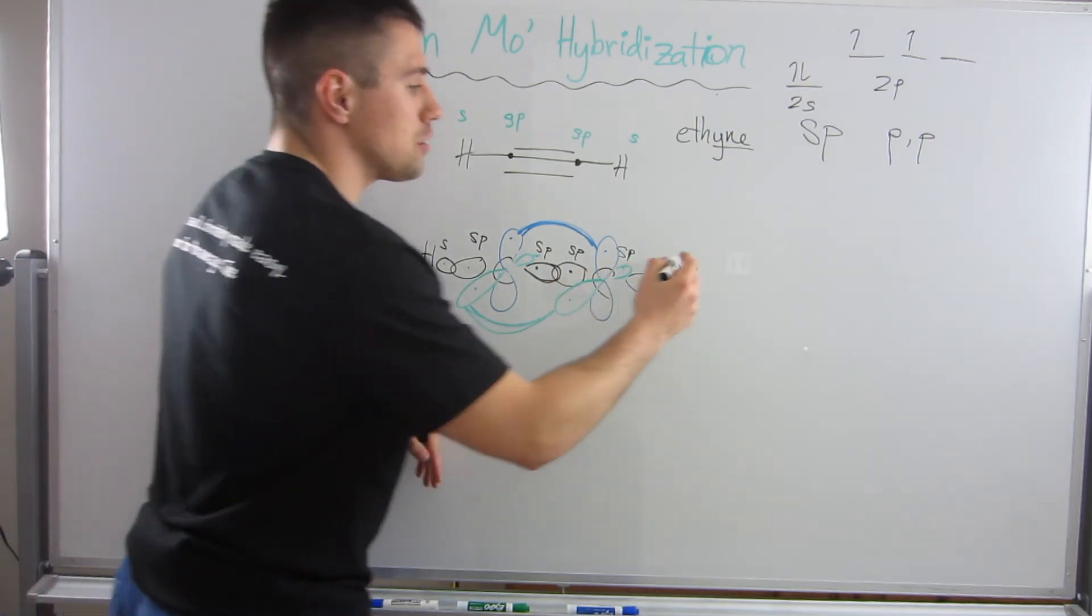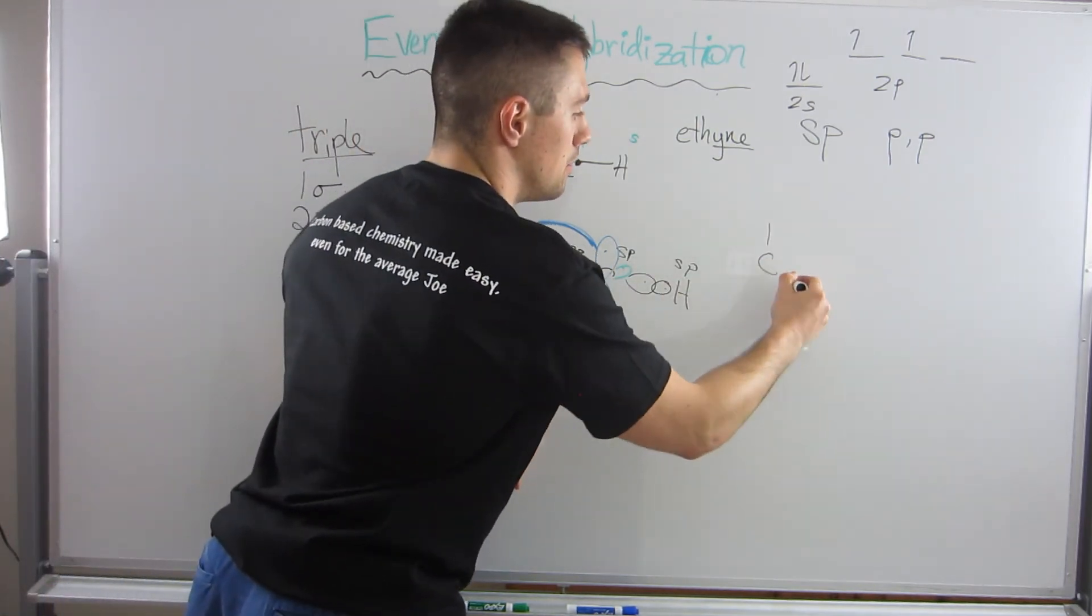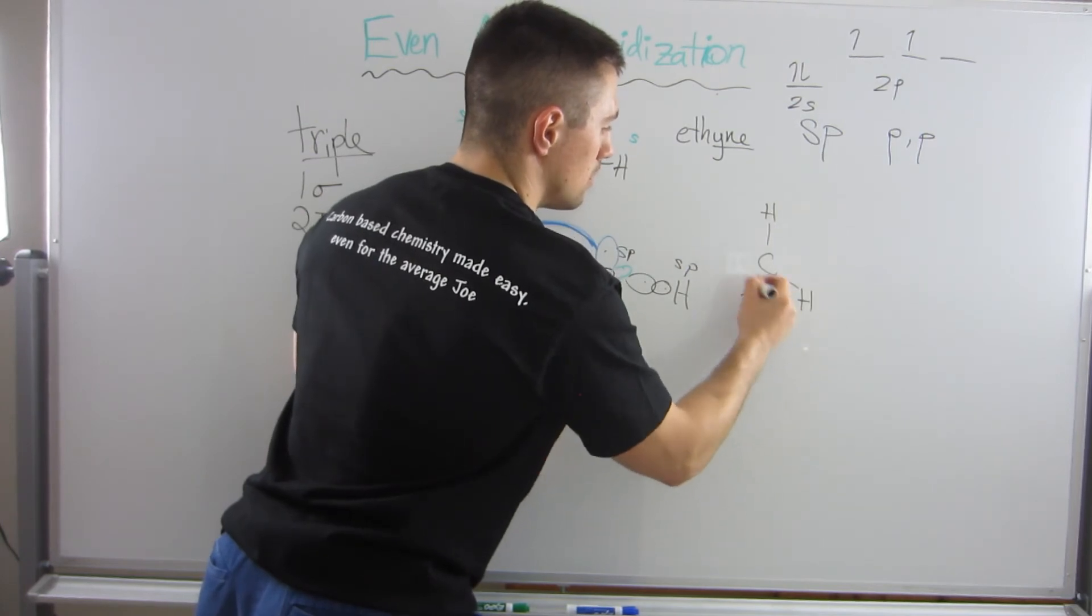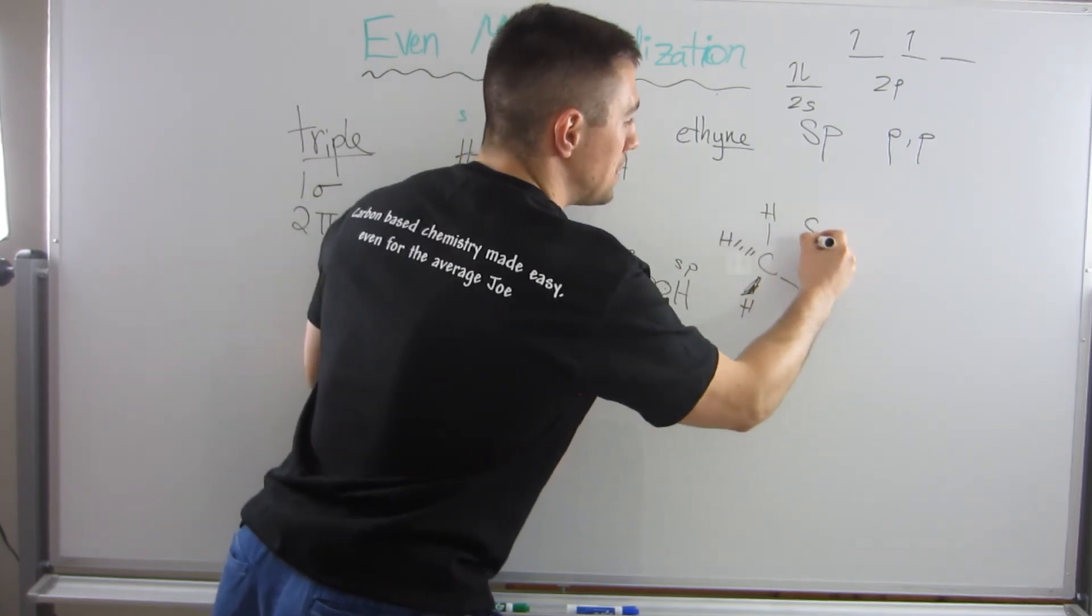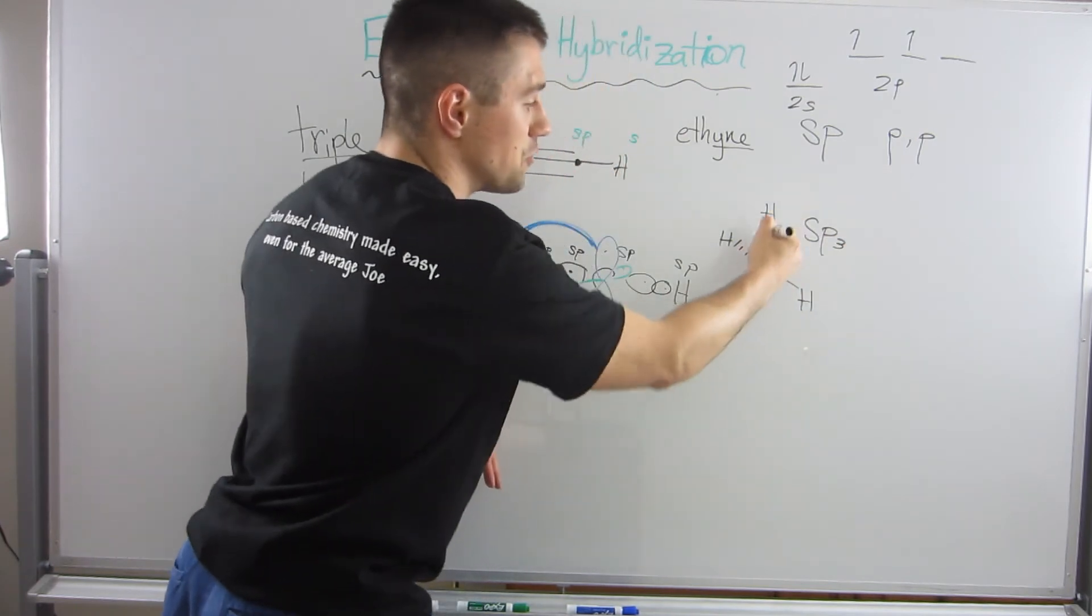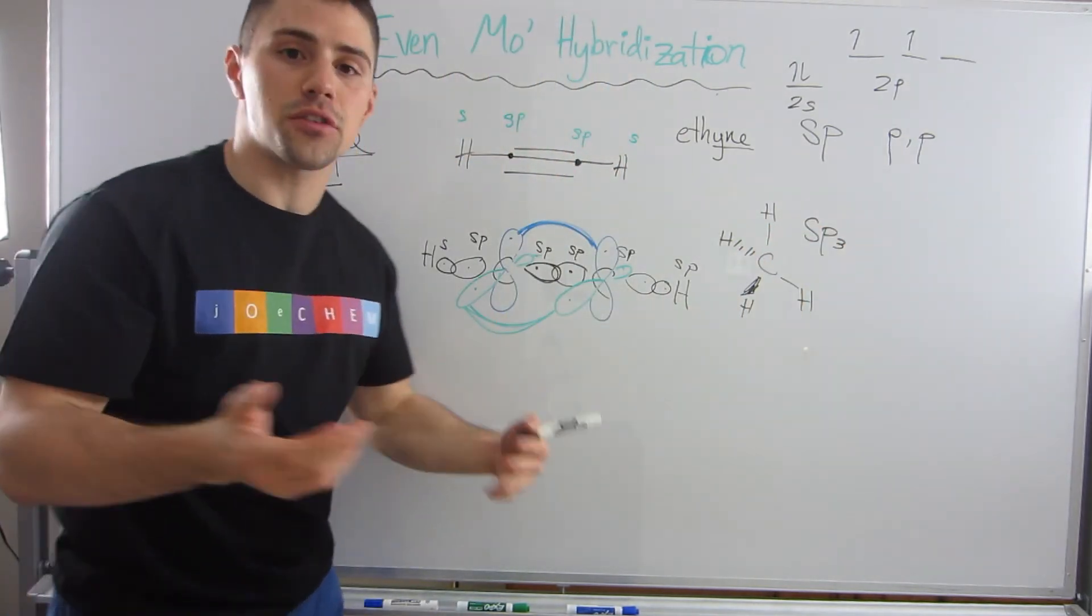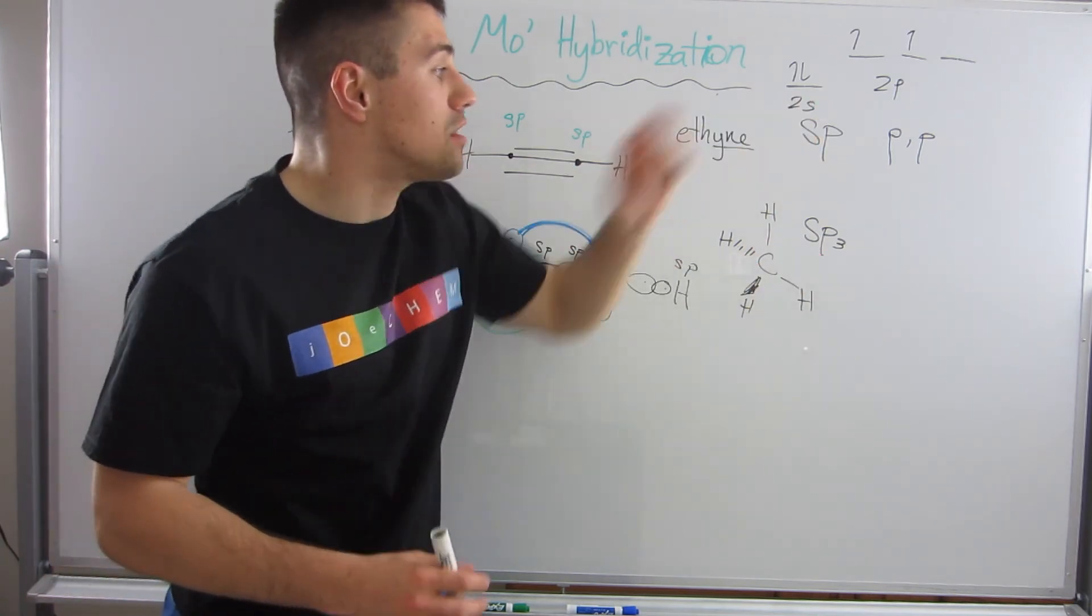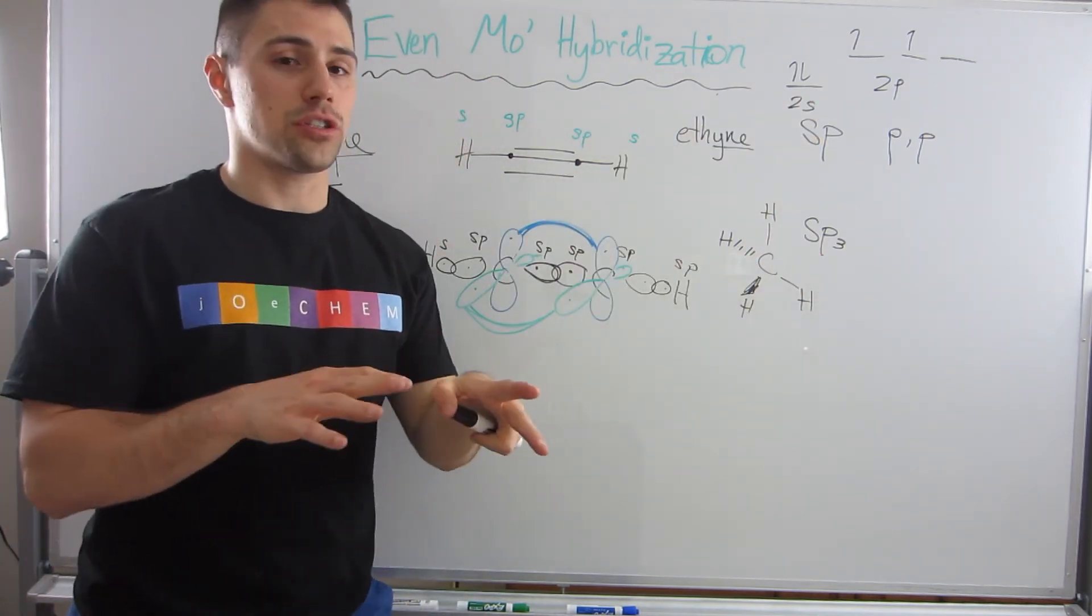If we look at something like methane, which is sp3 hybridized because of its four bonding areas, then it makes sense that there's no pi bond. There are no leftover p orbitals—we're using them all.